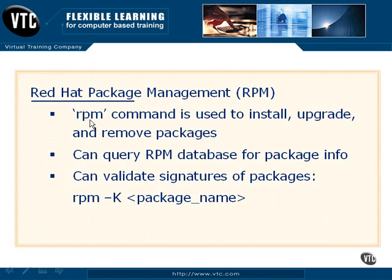We also use RPM to actually perform the installations, and we'll take a look at that in just a moment. But I also wanted to mention the validation of signatures. It's a very common practice on the Internet, especially in hacker and security circles, where you might find problems with your packages such as an integrated rootkit, something that might compromise your system, or a virus. So it's always a really good idea to obtain an MD5 sum or a SHA-1 sum to verify that the RPM package is what you intended to be getting. You can validate the signature of the application by using the -k command.